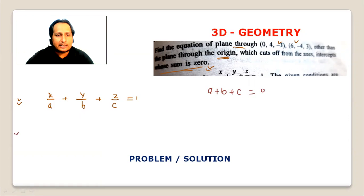The second information: it passes through (0, 4, -3), so 0/a + 4/b - 3/c equals 1. The third information is from point (6, ..., ...): 4/b - 3/c equals 1.